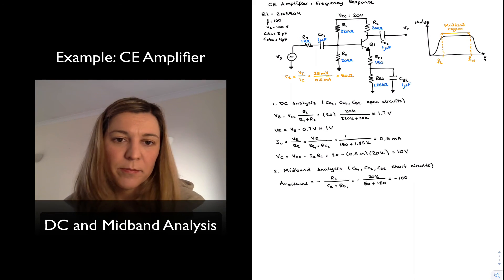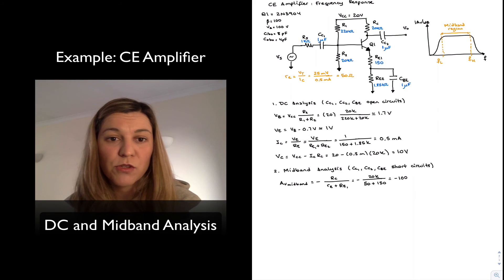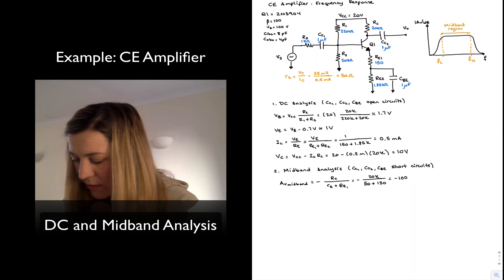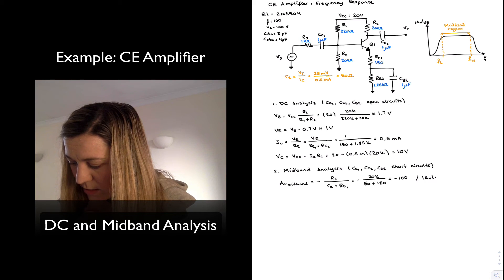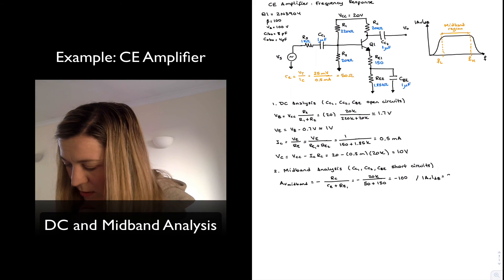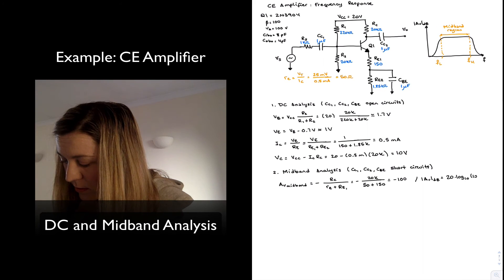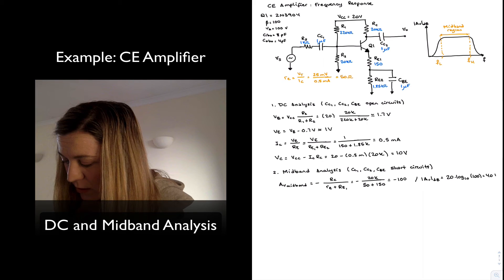Now, in my Bode plot, I typically will represent my gain in terms of, or in dB scale, decibel scale. So I can calculate if I wanted, my AV in decibel is just going to be 20 times the log base 10 of the magnitude of the gain, which is 100, and that's going to give me 40 dBs.